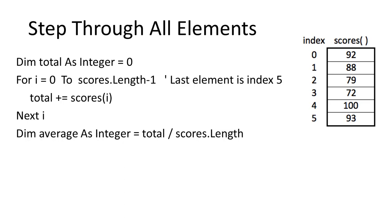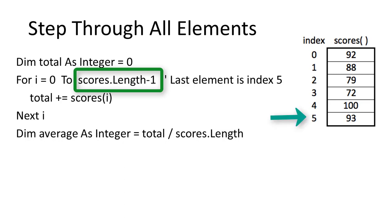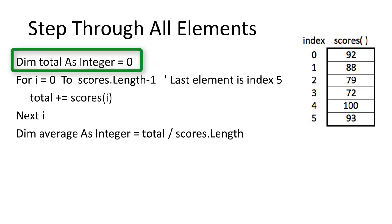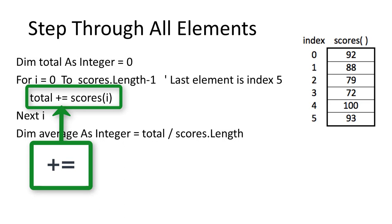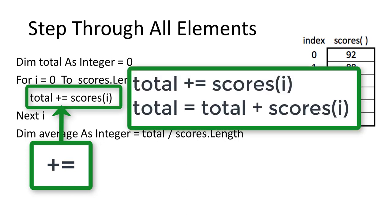Here is a for loop used to step through an array to compute the average of all the scores. The for loop starts the index at 0 and goes up to length minus 1, because the length of the array is 6 but the last index value is 5. Total is initialized to 0 before the loop starts — we don't want to set total to 0 inside the loop, otherwise it will keep resetting and end up as just the last score instead of the sum of all scores. The plus-equal operator adds each score into total, equivalent to writing total = total + scores(i).